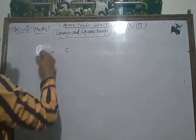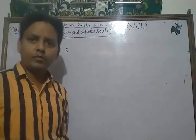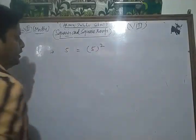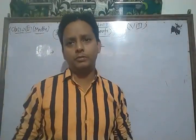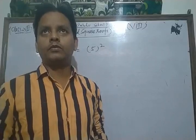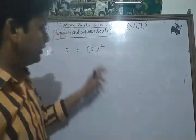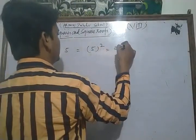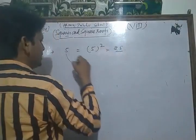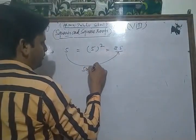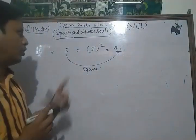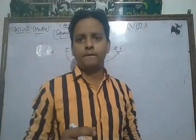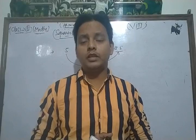Suppose that we have a number 5 and we want to find the square of 5. The concept of square is we just write the power of 2 of any number. So this is 5 squared. After solving, five fives are 25, so this is the square of 5. It means that the square of 5 is 25. This is the concept of square.